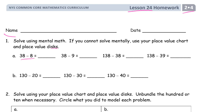38 minus 8 — you're just taking away all the ones, so you'll have 30 left. And 38 minus 9: well, if 38 minus 8 is 30, and I'm going to take one more away, I'm only going to have 29 left.